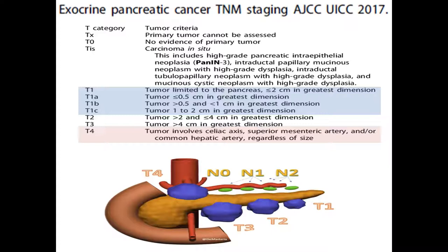T4 includes all the previous size categories. If the tumor involves the celiac axis, superior mesenteric artery, or common hepatic artery, regardless of the size — even if it's less than half a centimeter — and it affects one of these great vessels, it will change to T4.